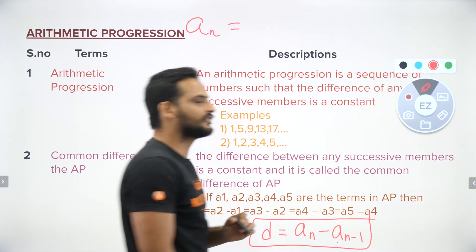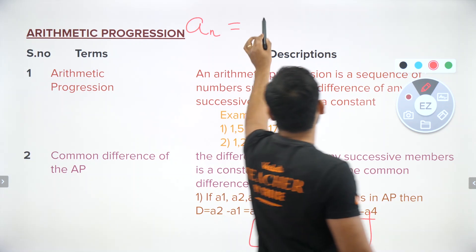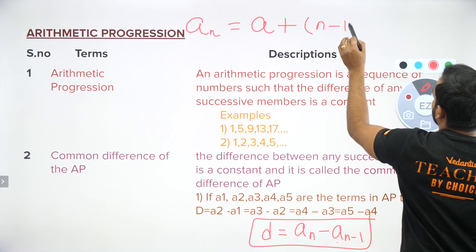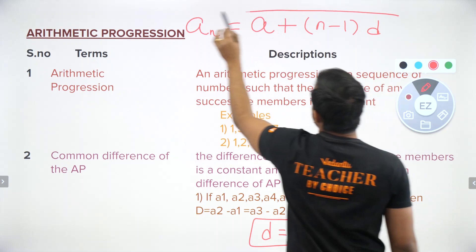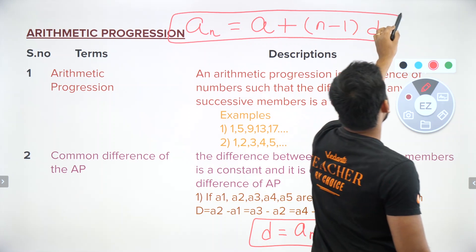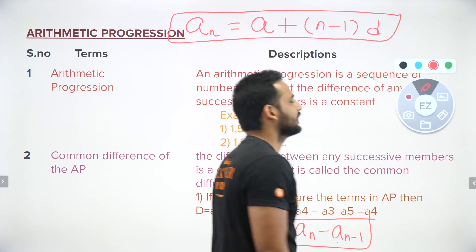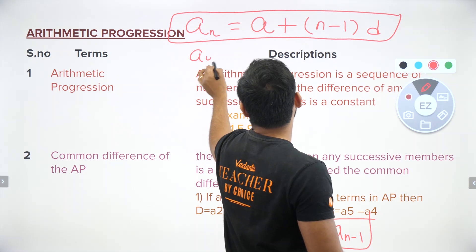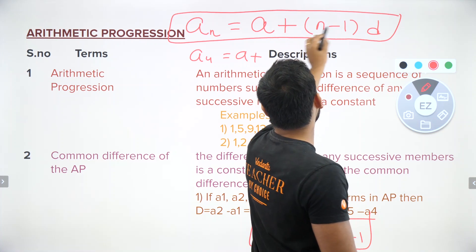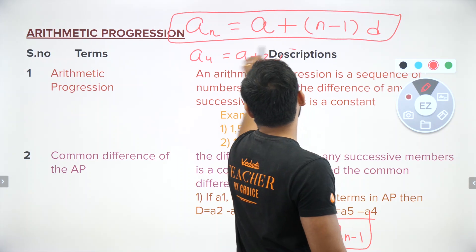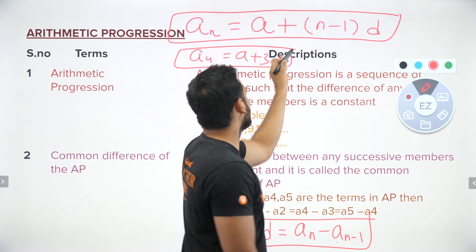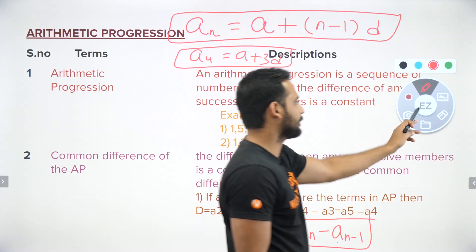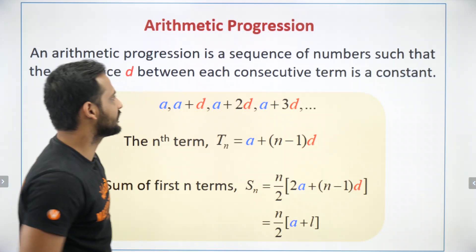The general term of an AP: the formula is aₙ = a + (n−1)d. This is one important formula. For example, if you want a₄, it will be a + (4−1)d = a + 3d.